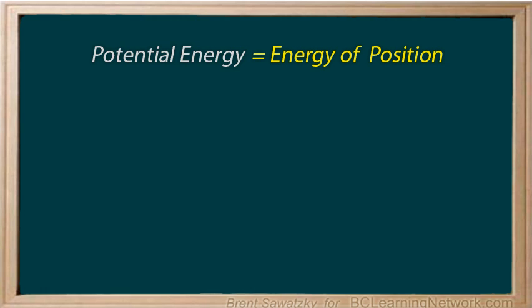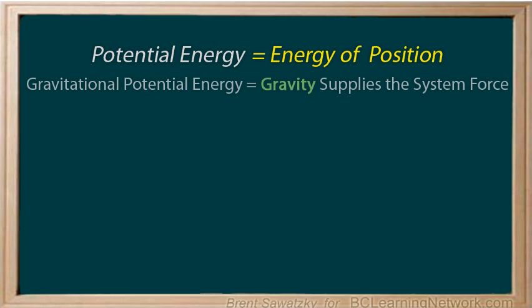In this tutorial, we reminded ourselves that potential energy is the energy of position, or stored energy. We then looked at gravitational potential energy, and we found that simply by lifting something up against the force of gravity, increased its gravitational potential energy. Our general equation for potential energy, Ep equals Fd, was modified for this special case of gravitational potential energy, to be Ep equals mgh.